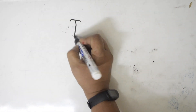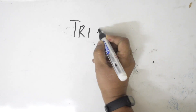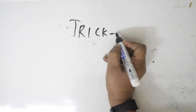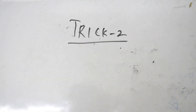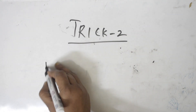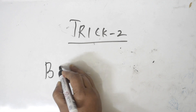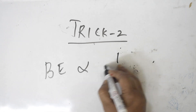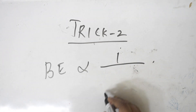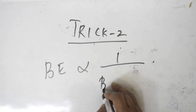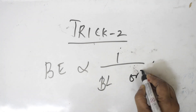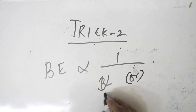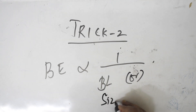Now trick number two: bond energy is inversely related to bond length, or inversely related to the size of the atom. Smaller the size, more the bond energy.